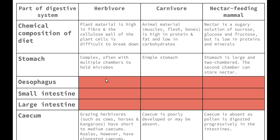Again, your job is to find some information on the oesophagus, small intestine and large intestine. The caecum of our nectar feeding mammals is absent — just like our carnivores — because the pollen is digested progressively through the intestines. Digestion begins in the stomach and some digestion occurs there, but as the undigested pollen moves through the intestines it is continuously digested, so we don't have microbial fermentation taking place either.